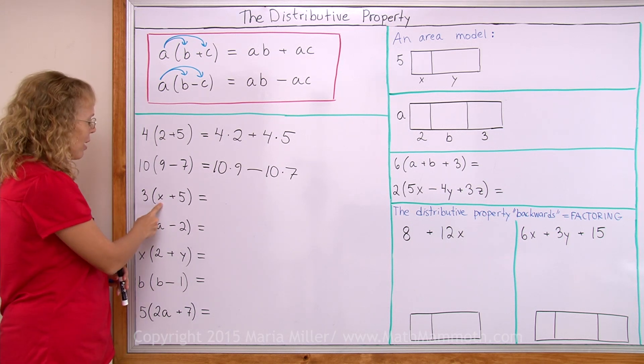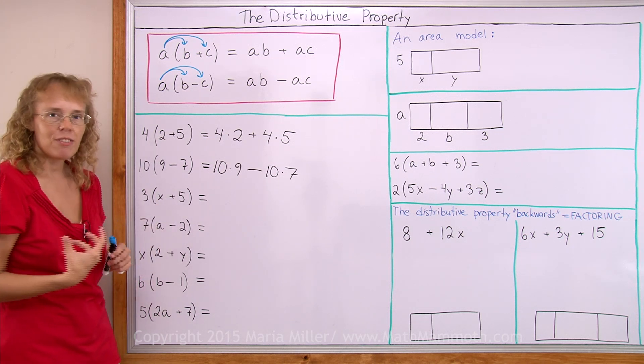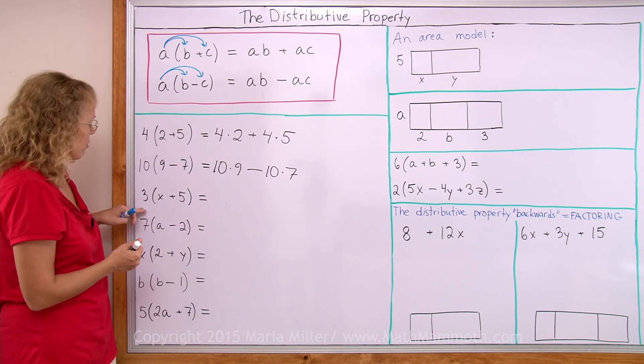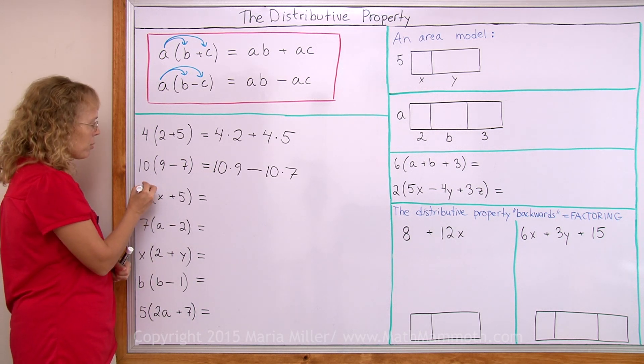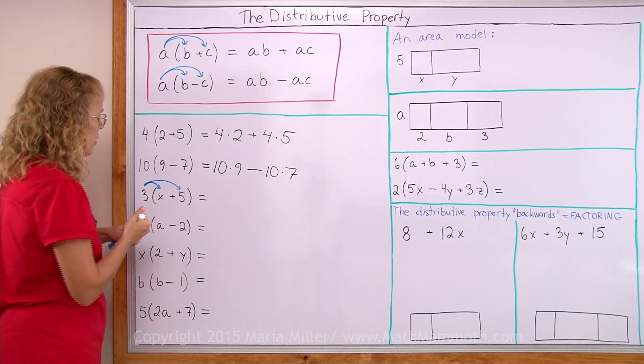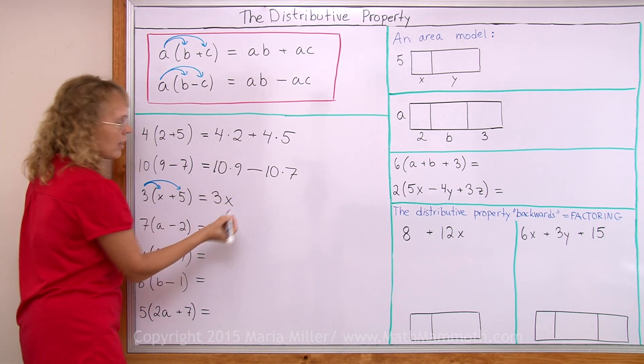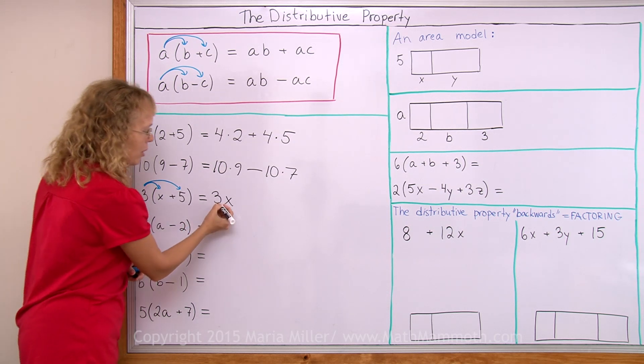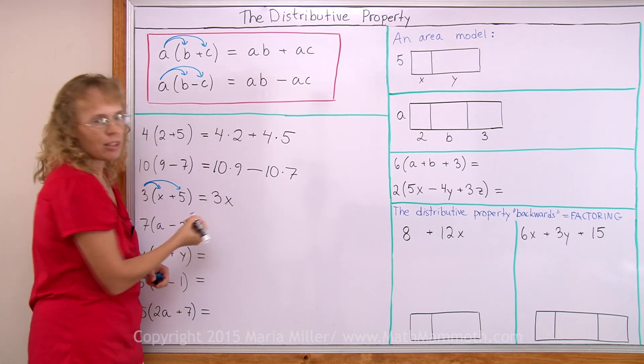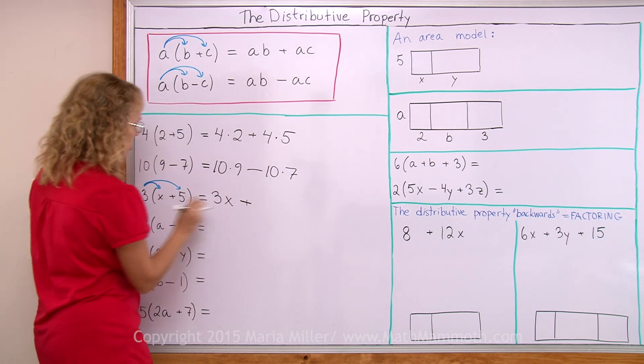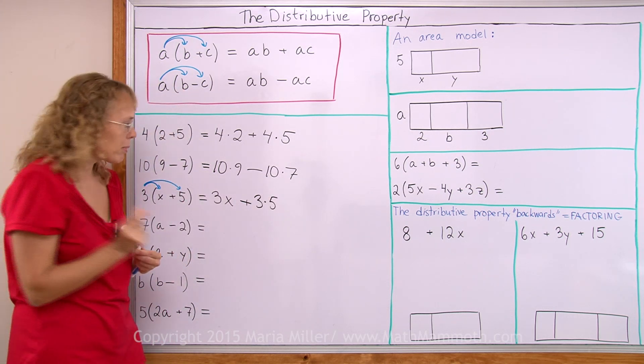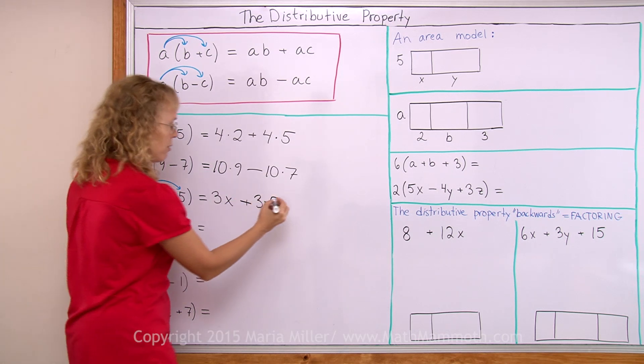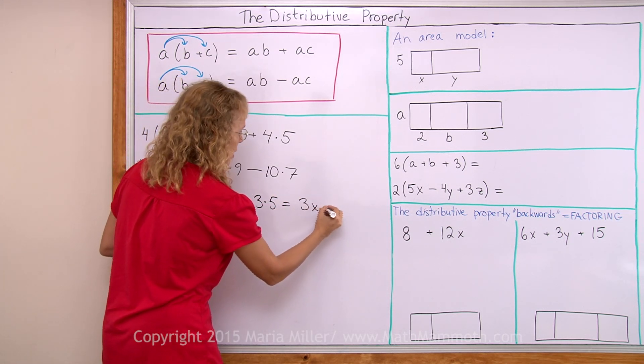But we most often use it in algebra when we have a variable somewhere there, so we cannot actually calculate the value as of yet anyway. For example here I have 3 times the quantity x plus 5. So I distribute this multiplication so that I have 3 times x and 3 times 5. So here I get 3 times x, but I don't write the multiplication symbol in algebra between a number and a letter. And then add to it 3 times 5. I can simplify just a little bit because 3 times 5 is 15, so I can write this as 3x plus 15.